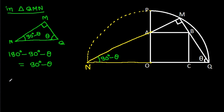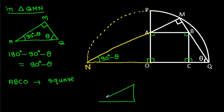We know that ABCO is a square, which means all these angles will be 90 degrees. So this angle will be 90 degrees. In angle ANO, this angle is 90 degrees.